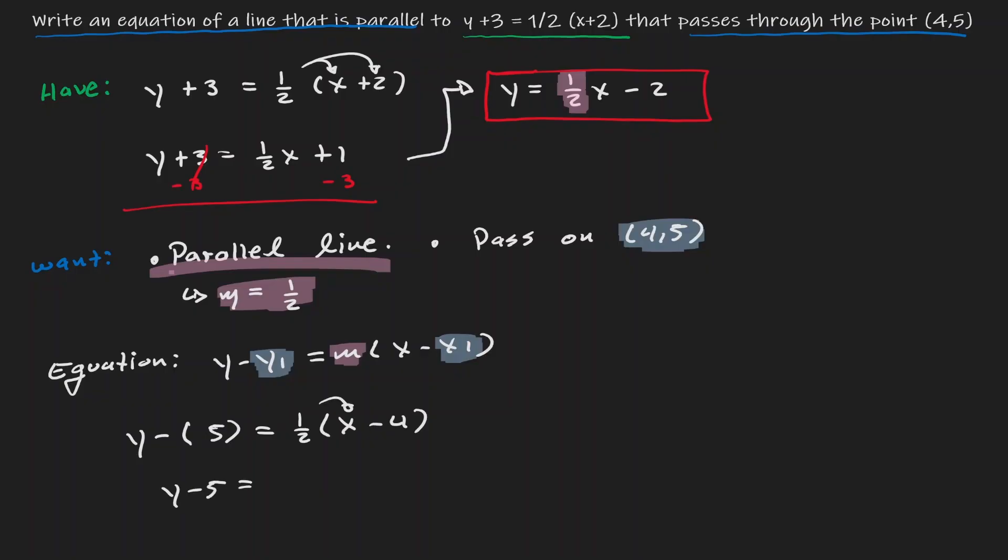If we distribute it becomes 1/2 x. And if we distribute it becomes negative 2. Let's add a 5. So now we have our parallel line: y = 1/2 x + 3. This equation that we have defined is parallel to the line 1/2 x - 2.